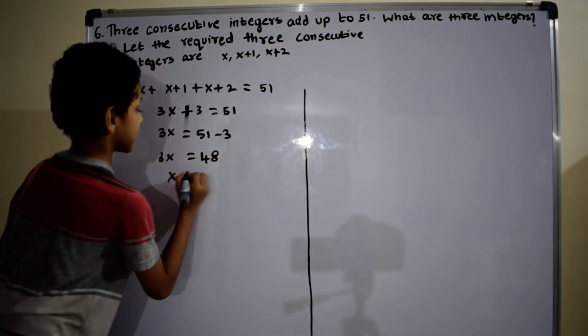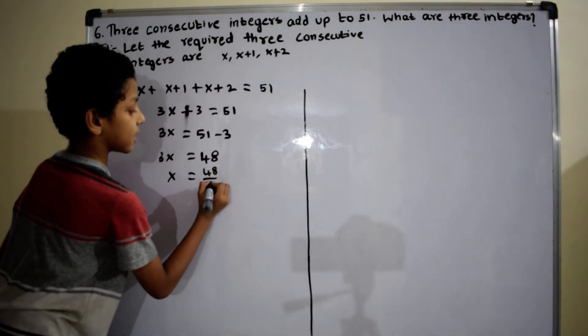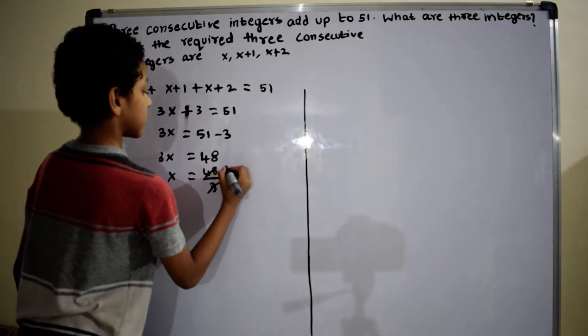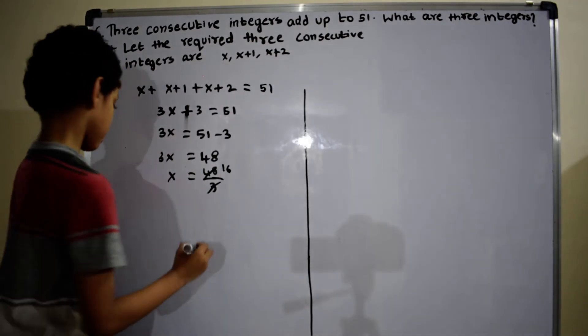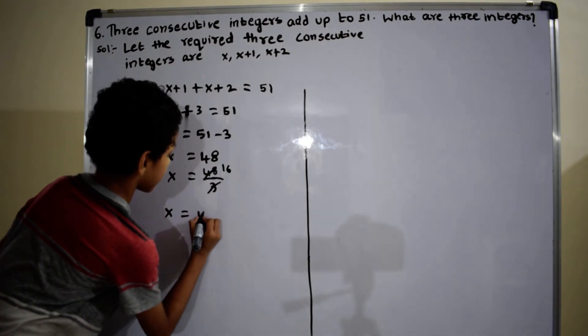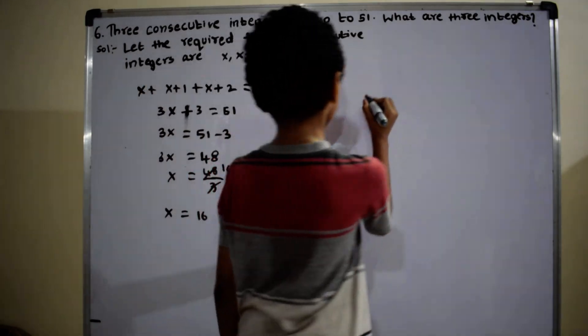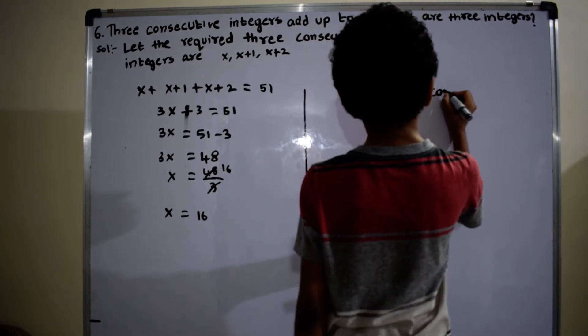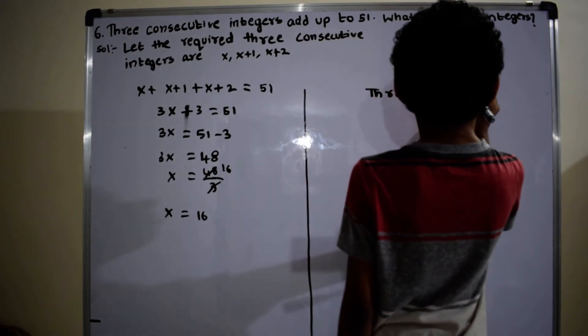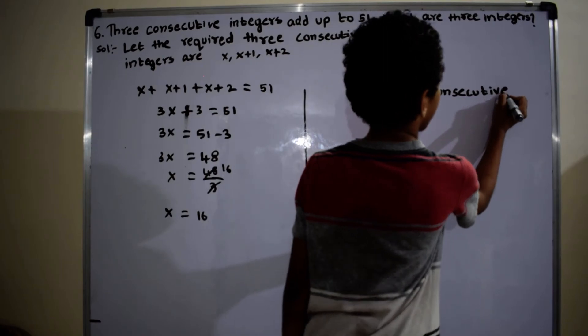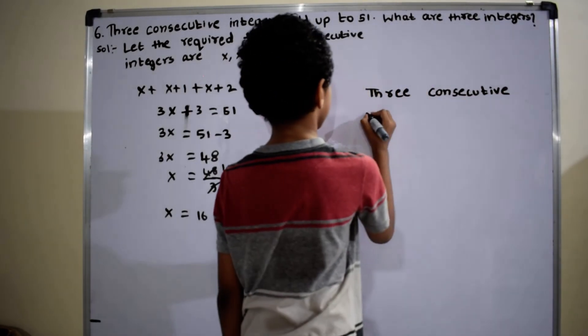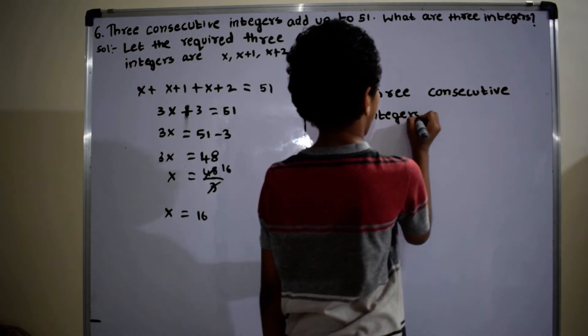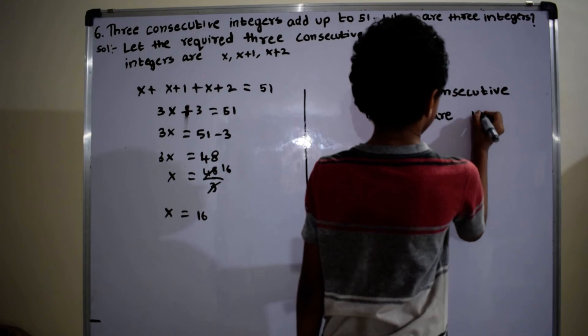So x equals 48 by 3. 3x equals 48, so x equals 16.